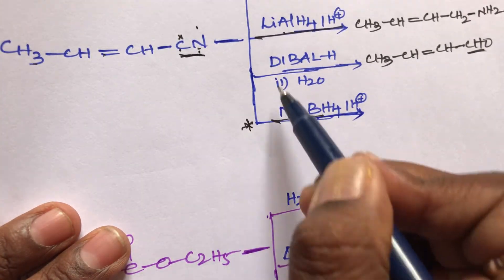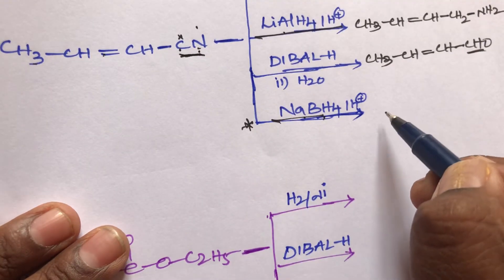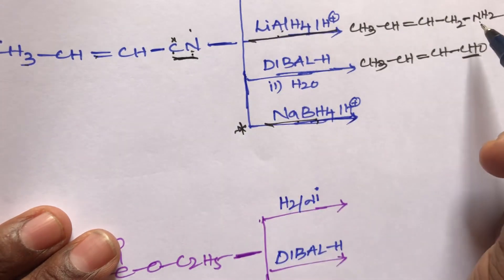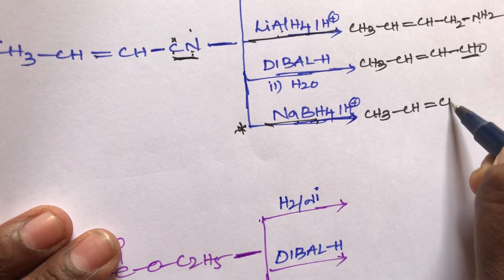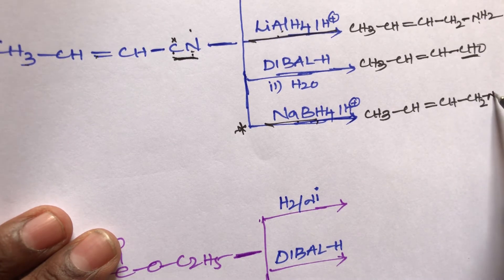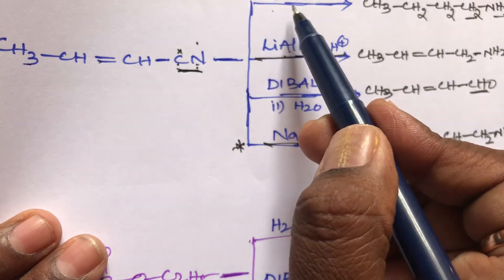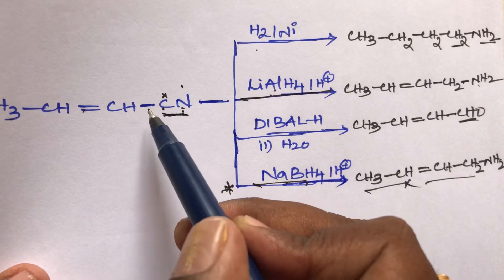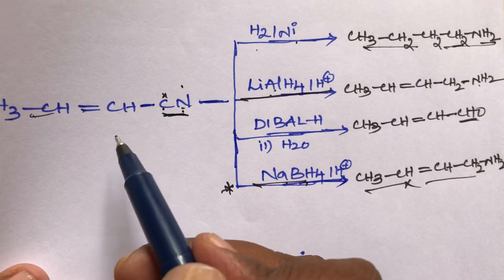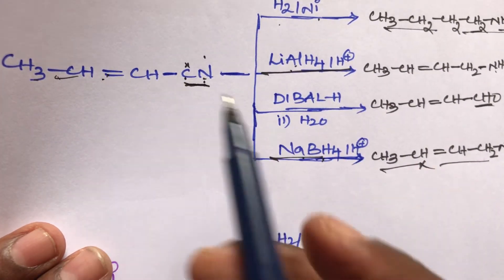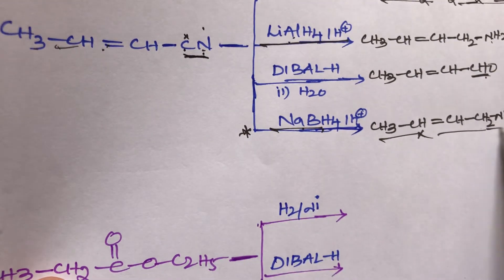Sodium borohydride also acts as a reducing agent; it can reduce only the cyanogroup and cannot reduce the double bond. Sodium borohydride is a weak reducer compared to LiAlH4. The cyanogroup is converted into a primary amine — similar product to LiAlH4. So the final product is CH3-CH=CH-CH2-NH2. Summary: H2/Ni reduces everything giving amines; LiAlH4 reduces only CN; DIBAL reduces CN to aldehyde; NaBH4 reduces CN to primary amine — none reduce the double bond except H2/Ni.